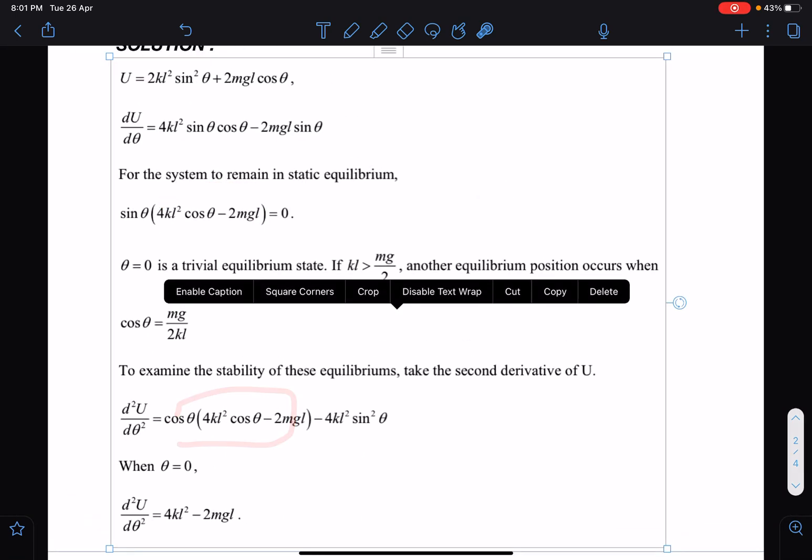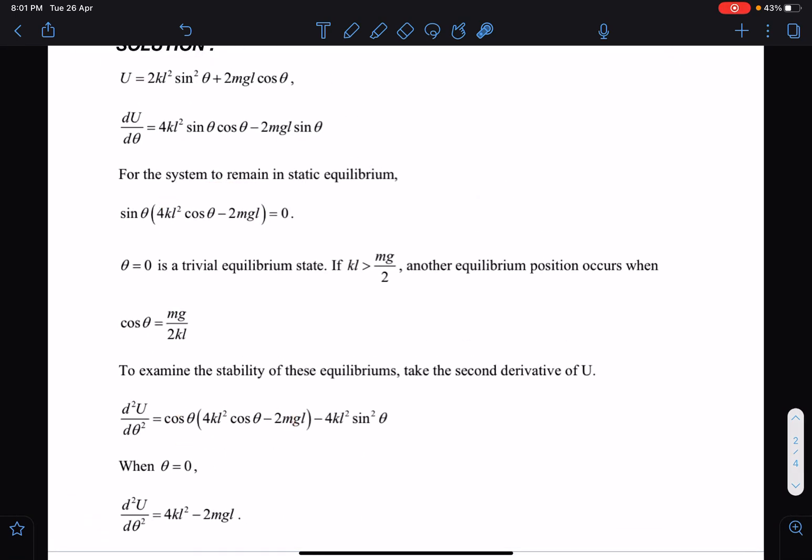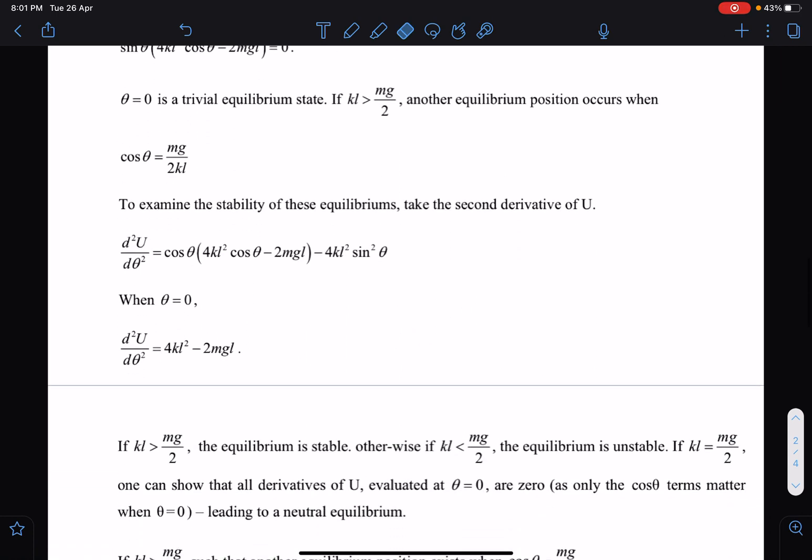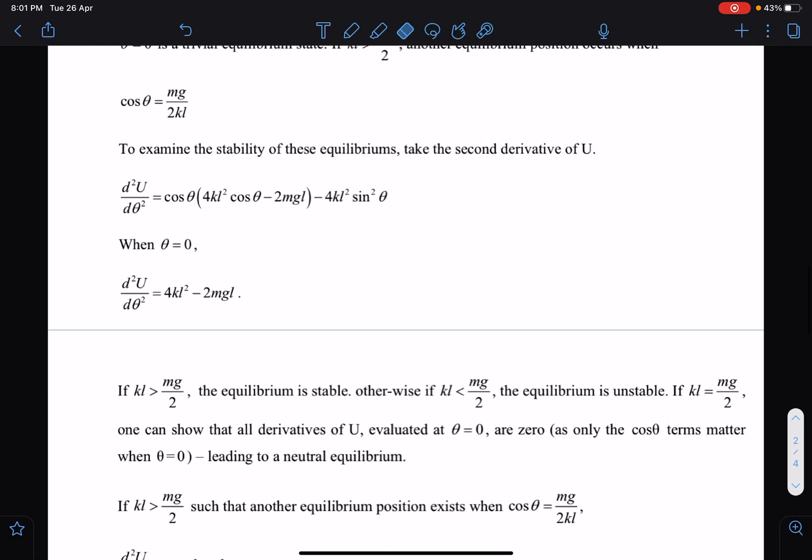And the funny part is it is the same thing which I am getting here for theta equal to 0. So once you are doing this, we can say for stable equilibrium, for a stable equilibrium, potential energy should be a minima, so double derivative should be positive. Double derivative should be positive.